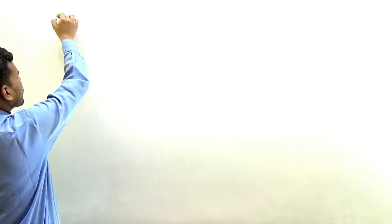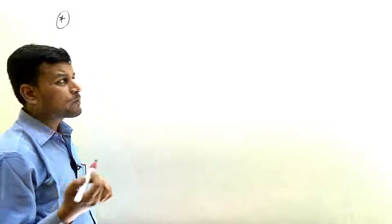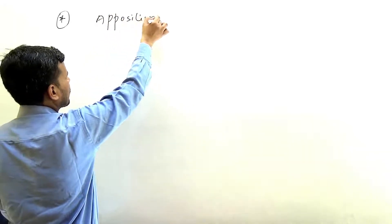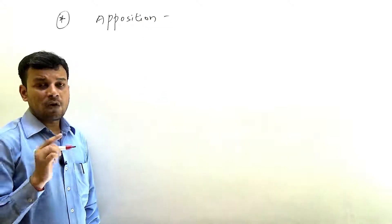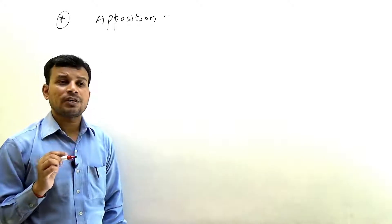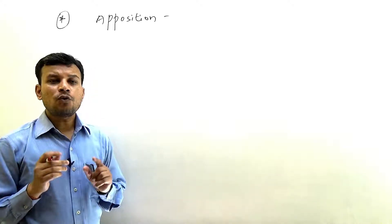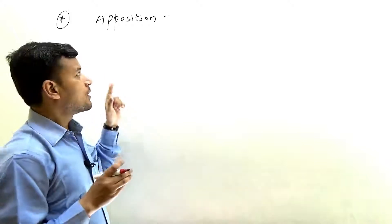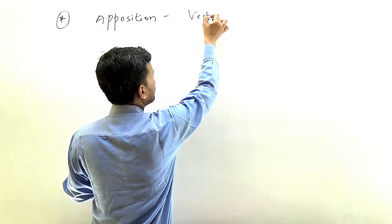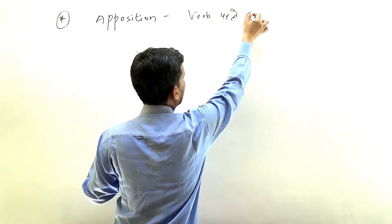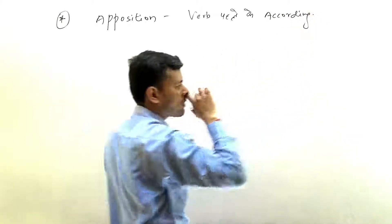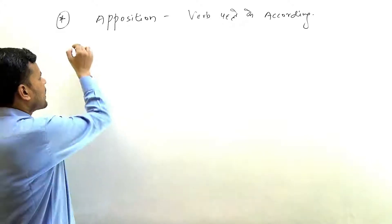Moving to the next rule about apposition. Apposition means 'samananter' (parallel). If a noun comes in apposition to the subject — the relation of one noun with the other — the verb will follow the first element (before the apposition). So whenever a noun appears in apposition, the verb agrees with what comes before the apposition.